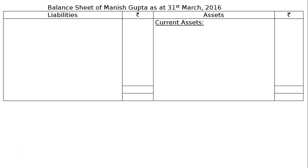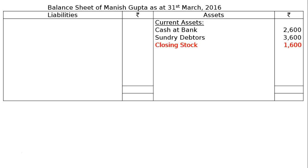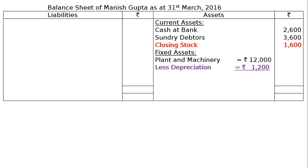Then comes the balance sheet of Manish Gupta as at 31st March 2016. Current assets: cash and bank Rs. 2600, sundry debtors Rs. 3600, closing stock Rs. 1600 (an adjustment — shown in the credit side of the trading account as well as here under current assets). Fixed assets: plant and machinery Rs. 12,000, less depreciation 10% (adjustment) Rs. 1200, giving a final column value of Rs. 10,800.